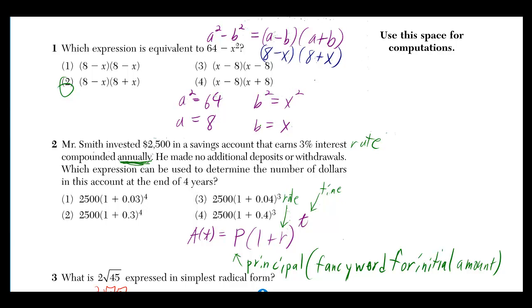If a squared is equal to 64, a is equal to 8. And if b squared is equal to x squared, b is equal to x. There's a special formula for a squared minus b squared: a minus b times a plus b.